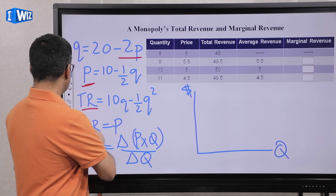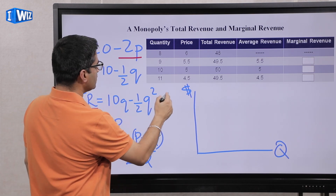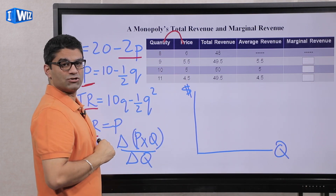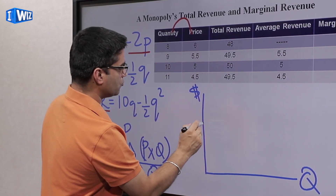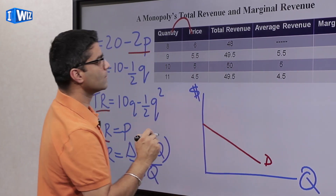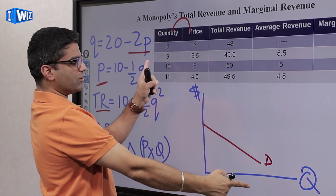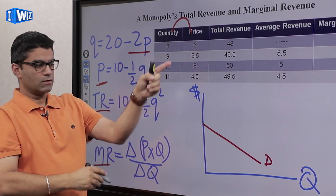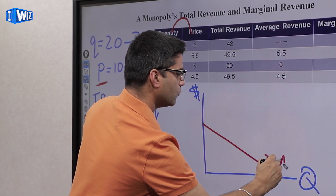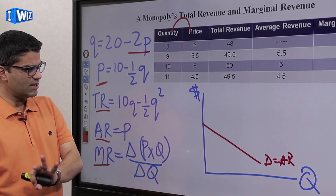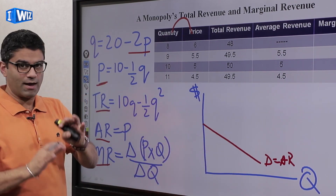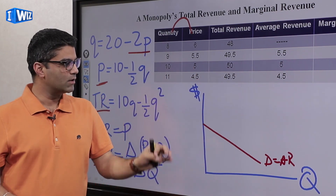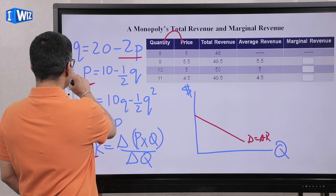When graphing, the demand curve shows the relationship between P and Q and is downward sloping. Average revenue, graphed with quantity on the x-axis and revenue on the vertical axis, is identical to the demand curve — so for a monopolist, the demand curve equals average revenue. Keep in mind that on the x-axis we only have quantities, and on the vertical axis we measure everything in dollars: total revenue, average revenue, marginal revenue, and costs when we bring those in.